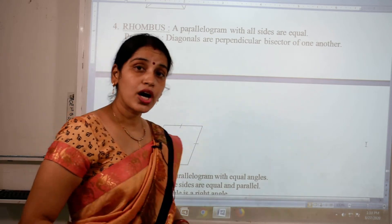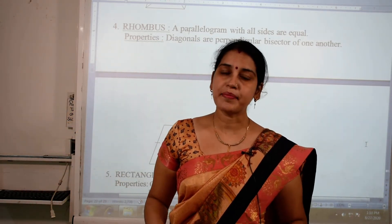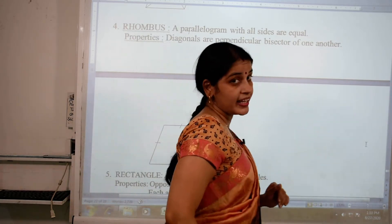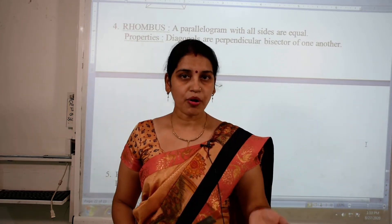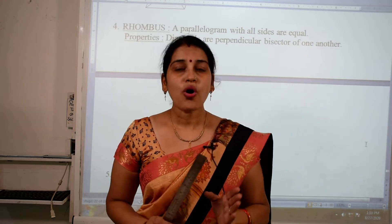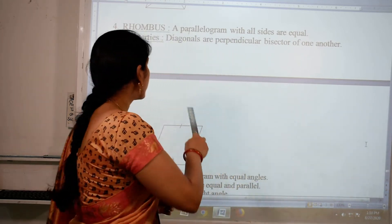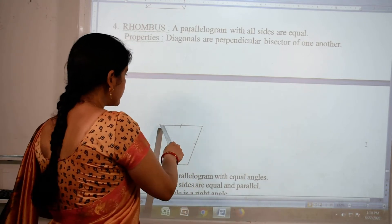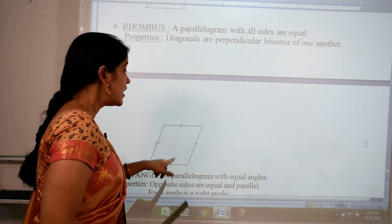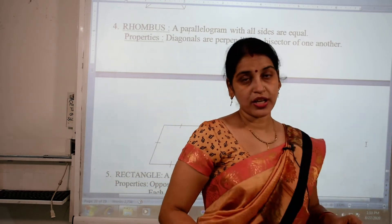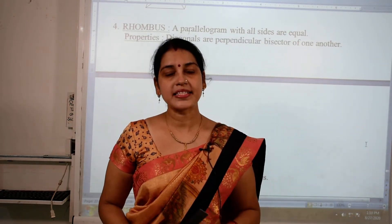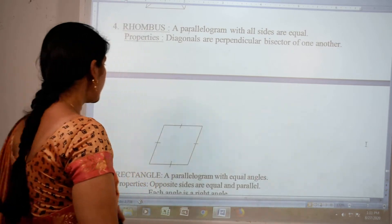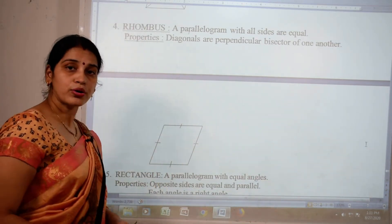Now the next type is rhombus. Rhombus has all the same properties as a parallelogram, so we can say it is a parallelogram with all sides equal. That means it has parallelogram properties, plus all four sides are equal. Its diagonals are perpendicular bisectors of one another — they are perpendicular and they bisect each other, dividing into two equal parts.